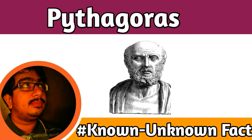He migrated to South Italy during 532 BC to escape the tyrannical rule that prevailed there. But his inquisitive and probing mind always made him share his ideas and thinking among the people. This desire ultimately led him to establish the Academy at Khartoum, presently known as Crotona.